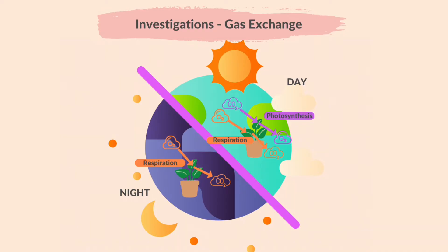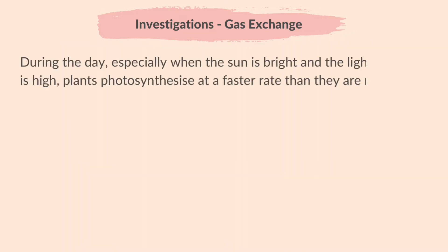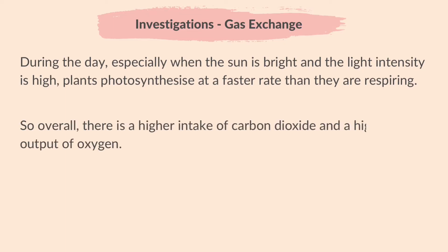At night, plants do not photosynthesize but they continue to respire, so they take in oxygen and give out carbon dioxide. During the day, especially when the sun is bright and the light intensity is high, plants photosynthesize at a faster rate than they are respiring. So overall, there is a higher intake of carbon dioxide and a higher output of oxygen.